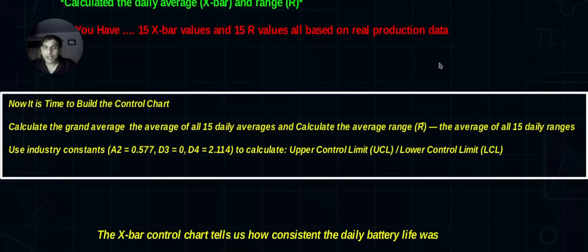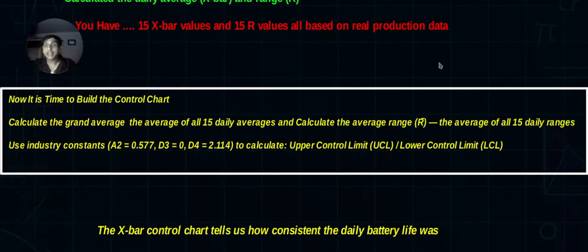To create a control chart, you need the lower control limit (LCL), the upper control limit (UCL), and the mid value. You're going to calculate the upper control limit, lower control limit, and we have some formulas and some industry constants. In your examination, they may provide these values, but usually it's safe to memorize them.